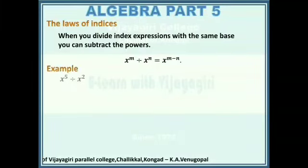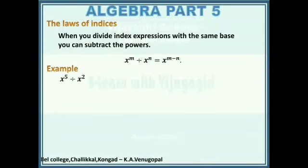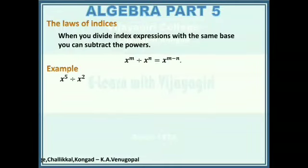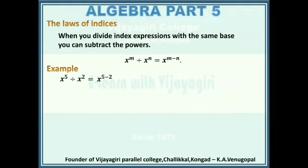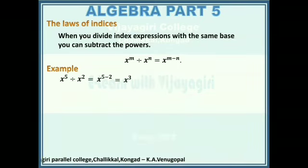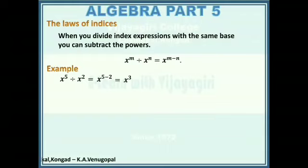Let's check some examples. x to the power 5 divided by x to the power 2: here it is with the same base, so we can use the law of indices. It can be written as x to the power 5 minus 2. 5 minus 2 is 3, so it simplifies as x to the power 3.